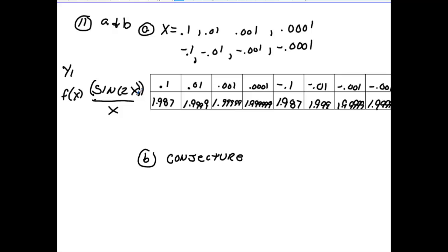Then what you want to do is you want to go to 2nd table set and key in the value of 0.1, and then go to 2nd table and see what the value is, and you're going to get 1.987. Do that for each one of these values here. That's all you've got to do here, and just key in the values, and you should get 1.987 and then 1.999, etc., etc.